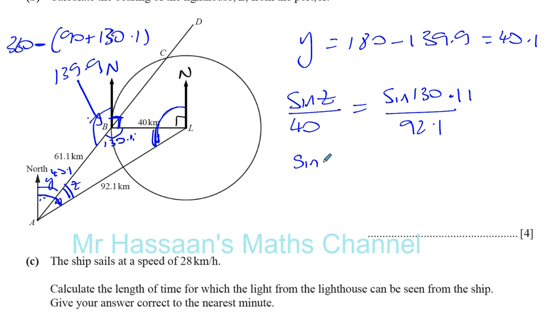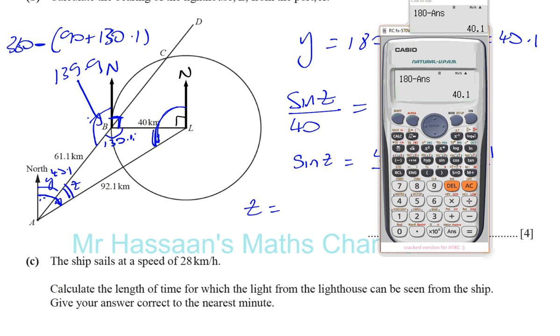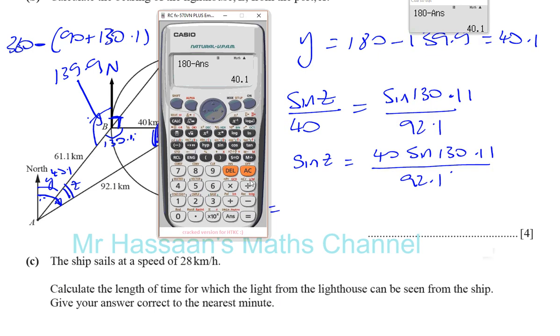So we can now say sine of the angle Z is equal to 40, cross-multiplying, times sine 130.11, divided by 92.1. So then I can use my calculator and find all that. So I'm going to have shift sine, inverse sine, I'll put my fraction again. So 40 times sine 130, I'll put an extra decimal place that it was before, and divided by 92.1. And of course it's degree mode, I didn't change that.